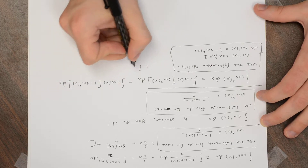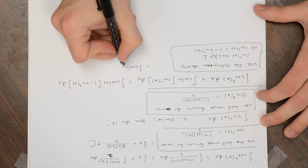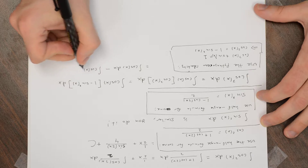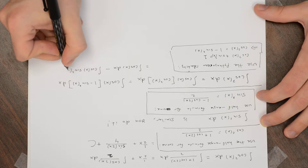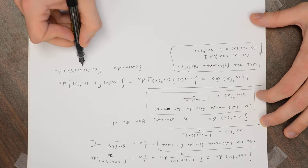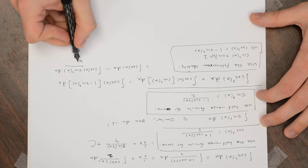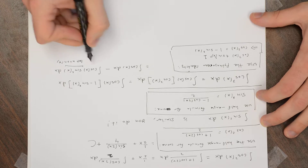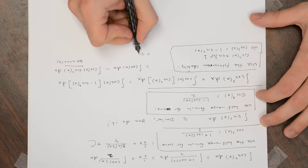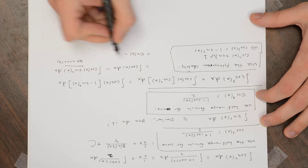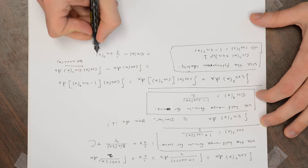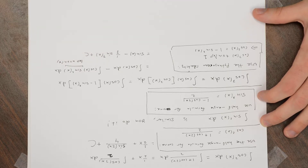We get the integral of cosine x — which is easy — minus the integral of cosine x times sine squared x. For the second integral, let u equal sine x, and then we have a du. The integral of cosine is sine, so this works out to sine x minus (1/3) sine cubed x plus a constant.